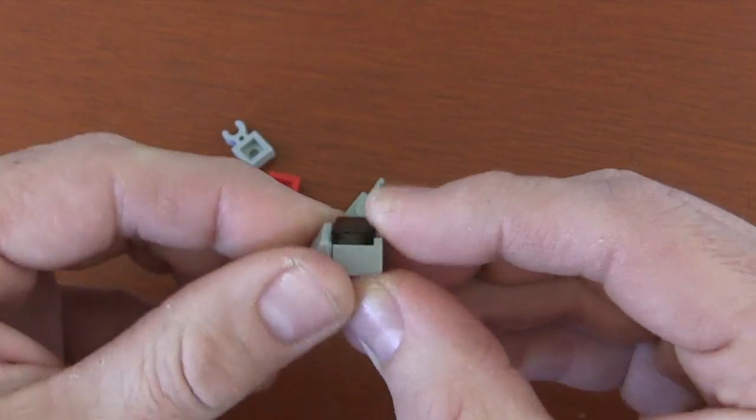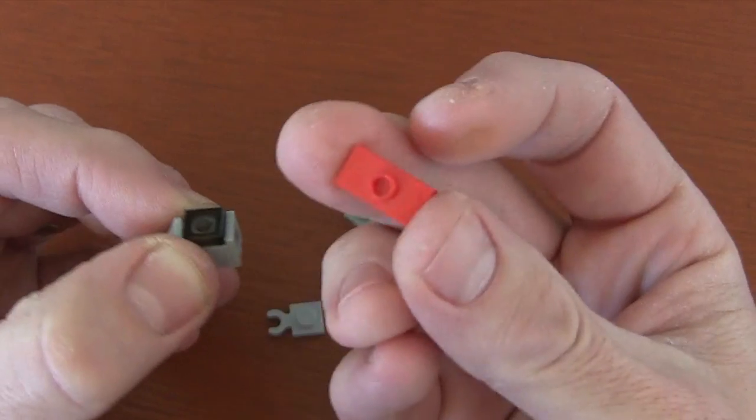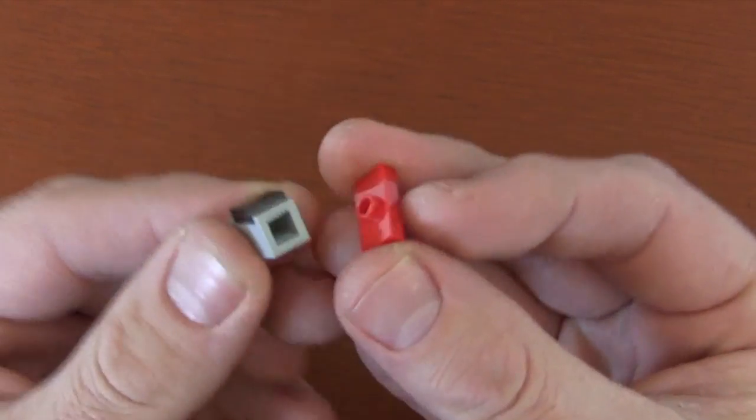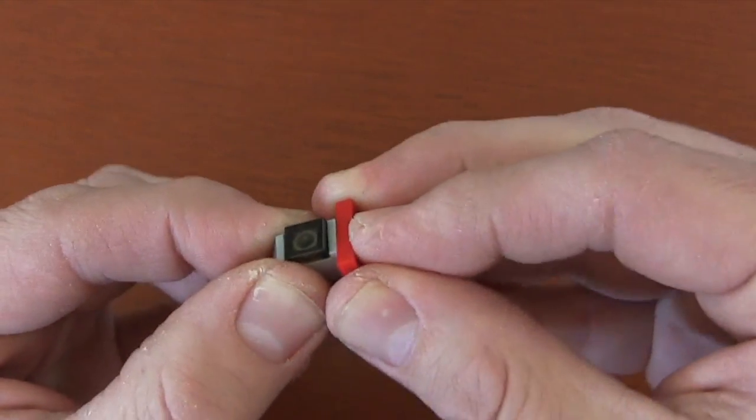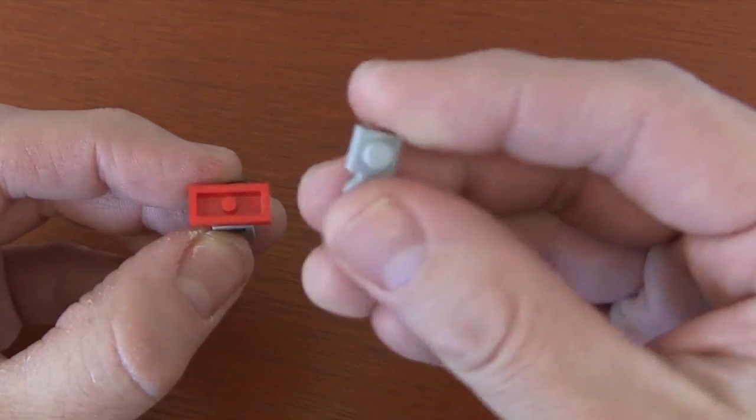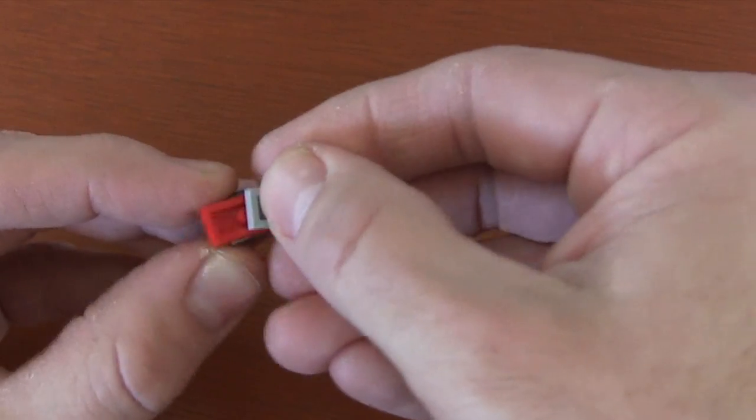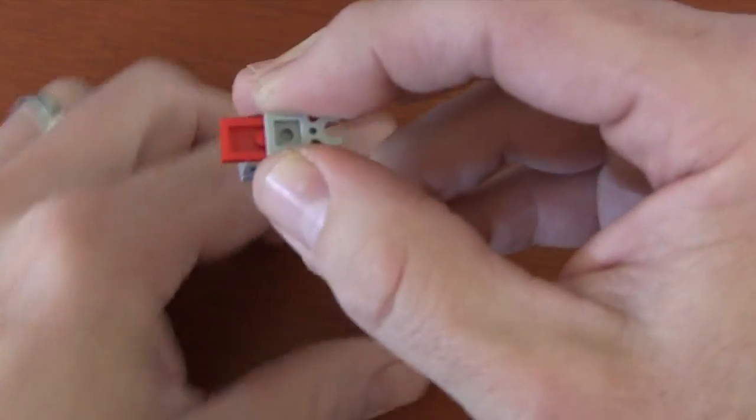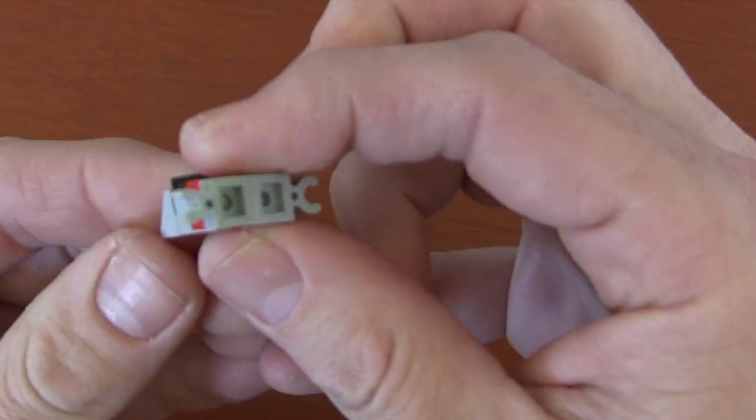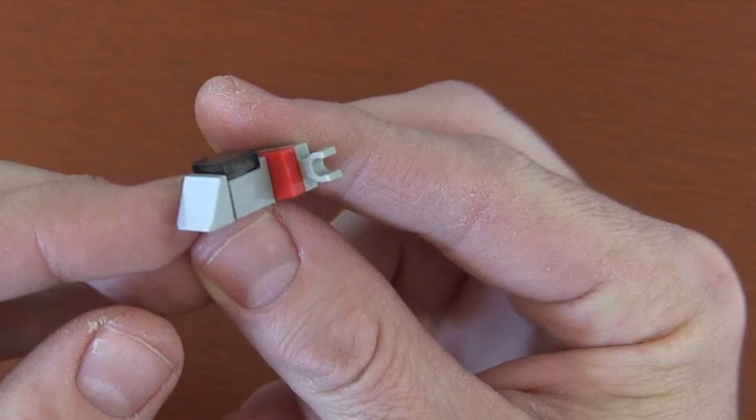Now to create the wings, we're going to get a one by two jumper plate. I'm using red to create Luke Skywalker's squadron, and we're going to put it right in that little hole in the stud. Then to create those famous X-Wings, the S-Foils, we're going to get a one by one plate with clip on side and just put it right there in the back of the jumper plate, and on the other side. And there you have an X-Wing fighter ready to make its approach on the Death Star Trench.